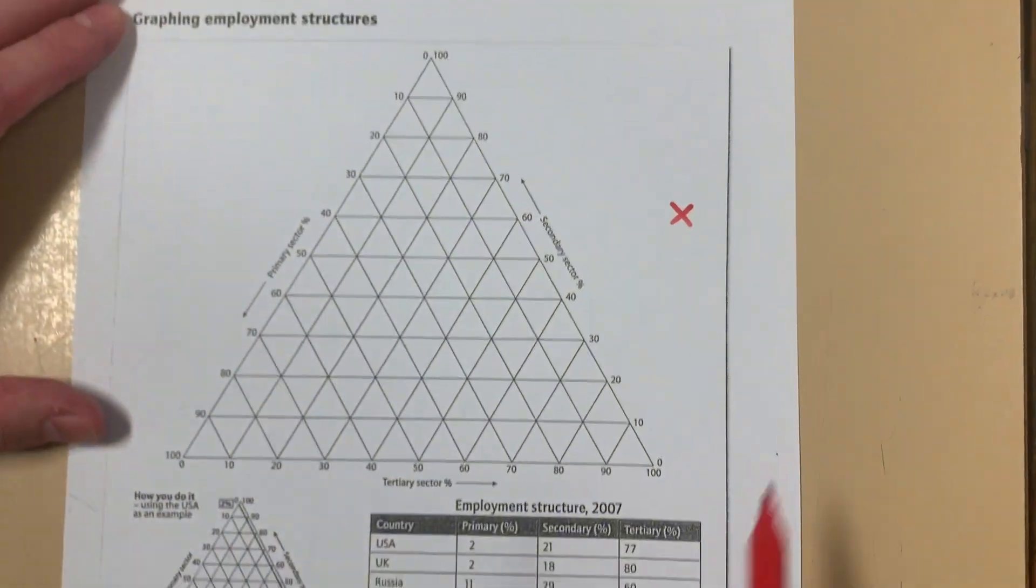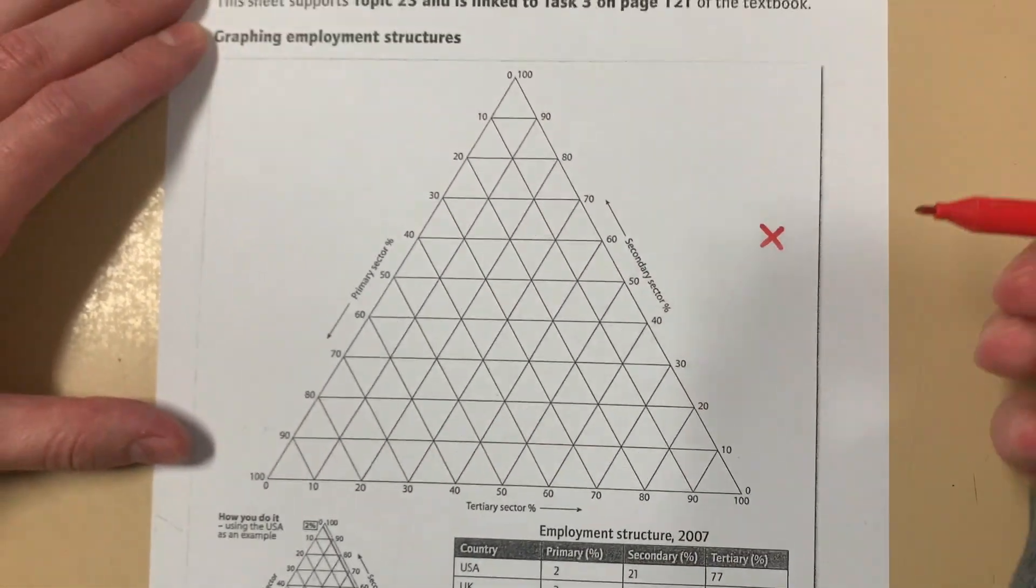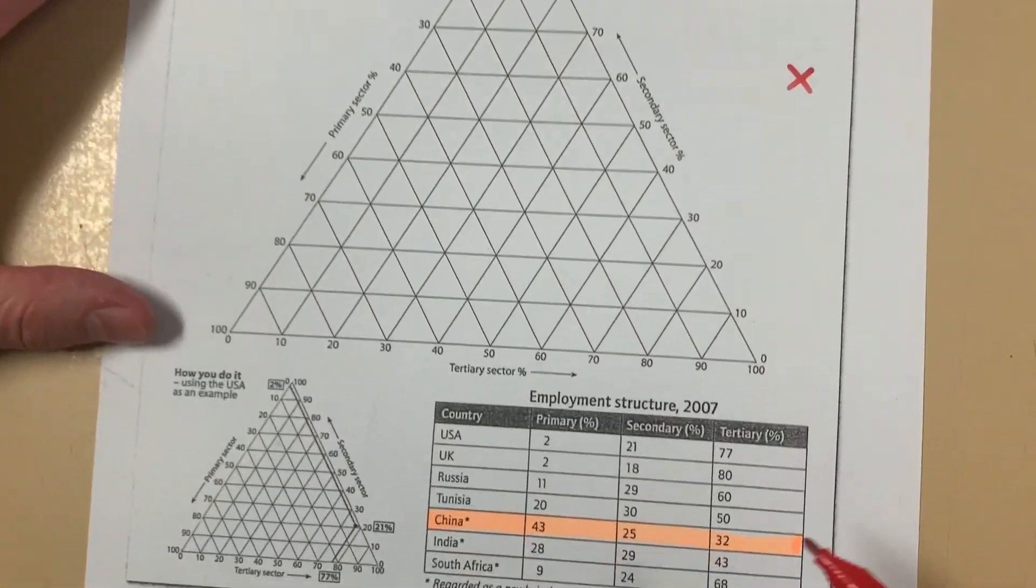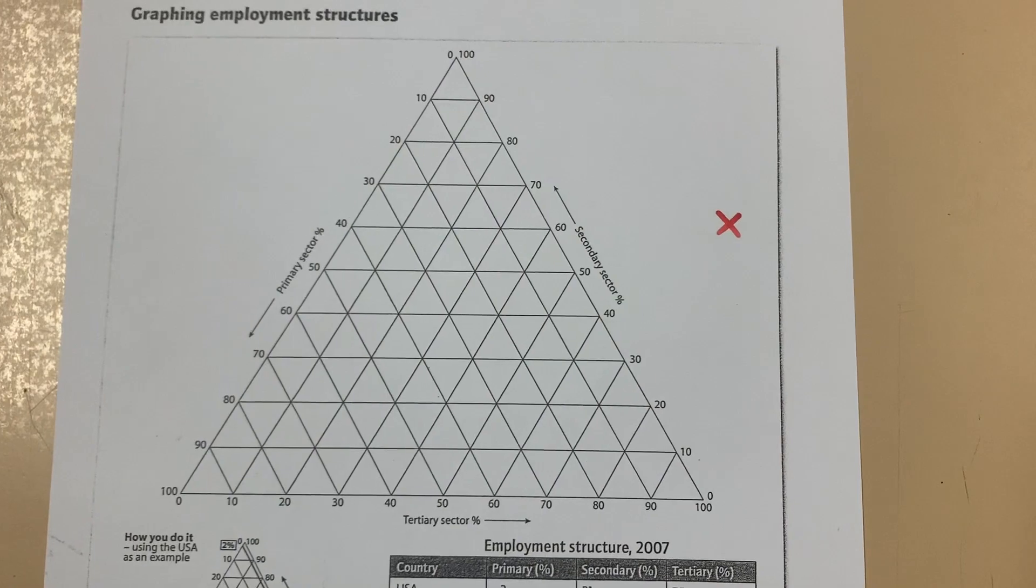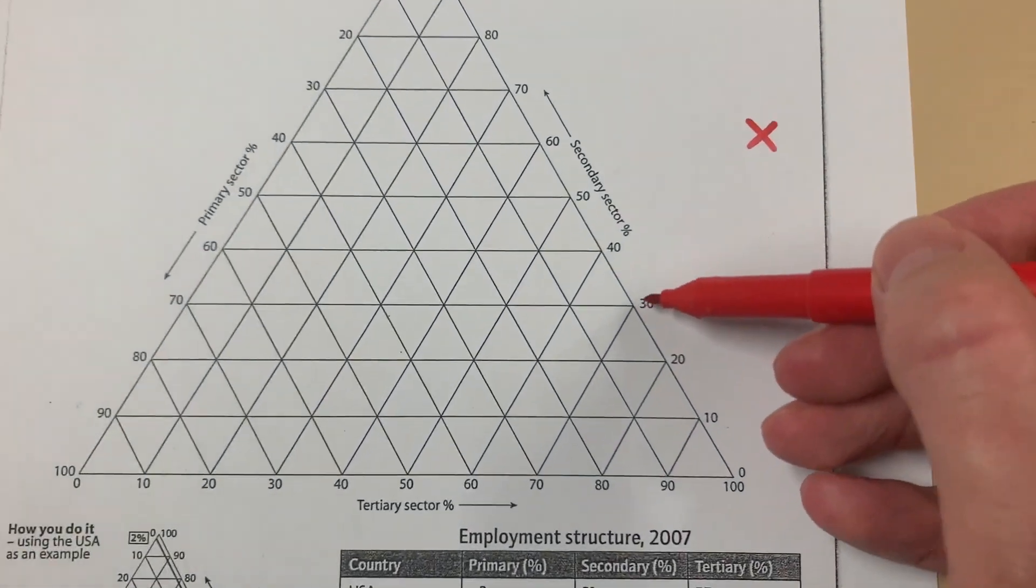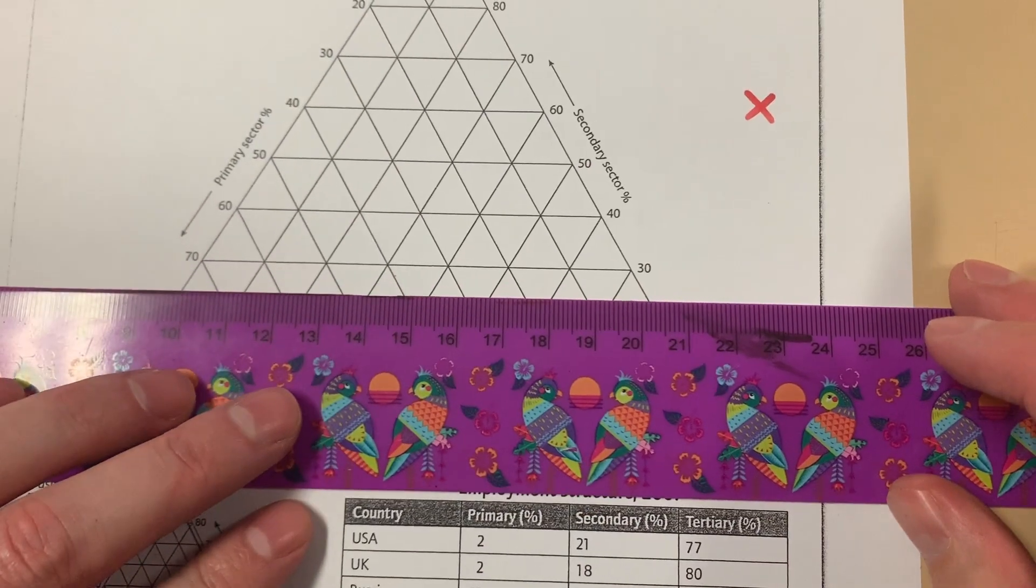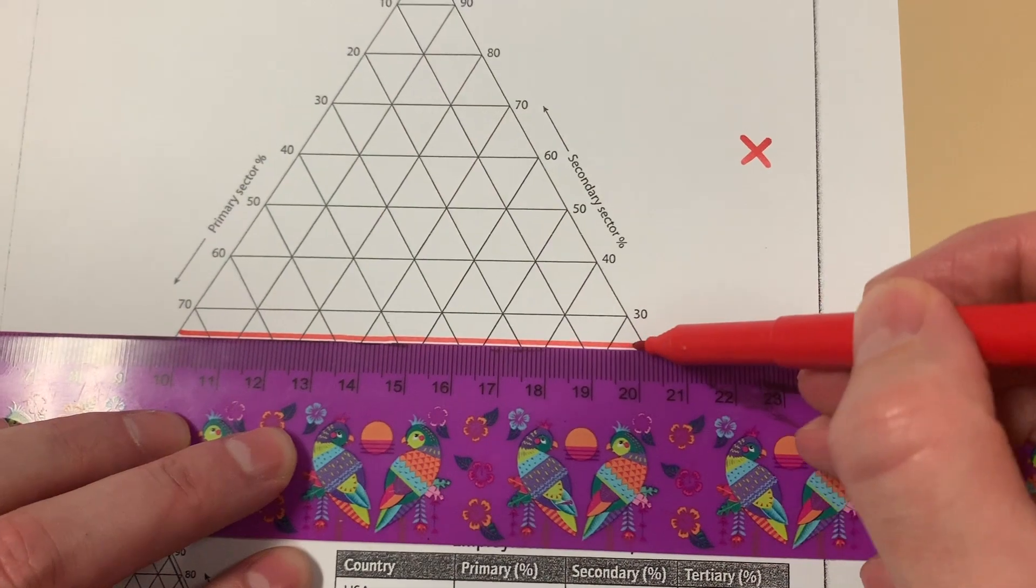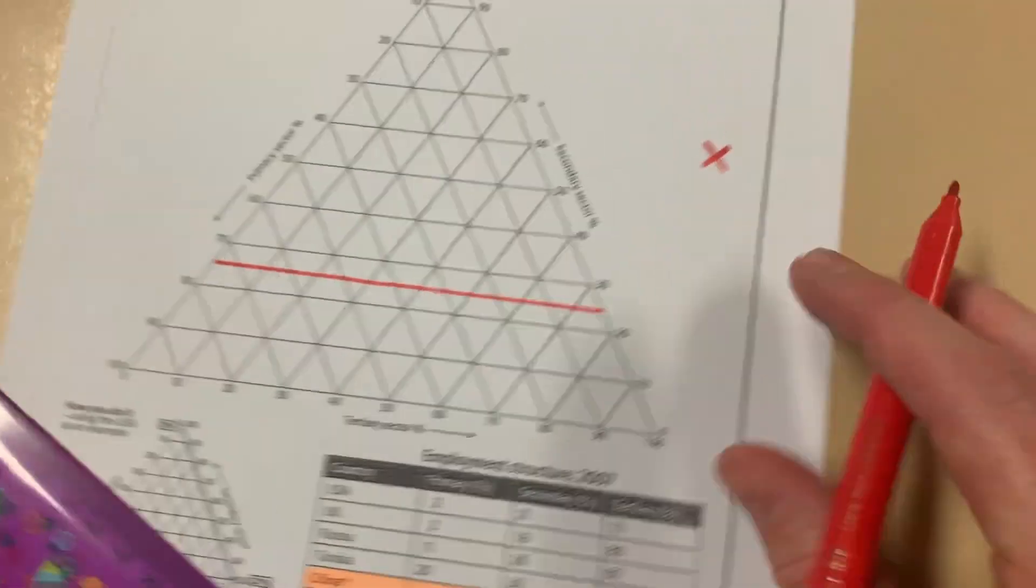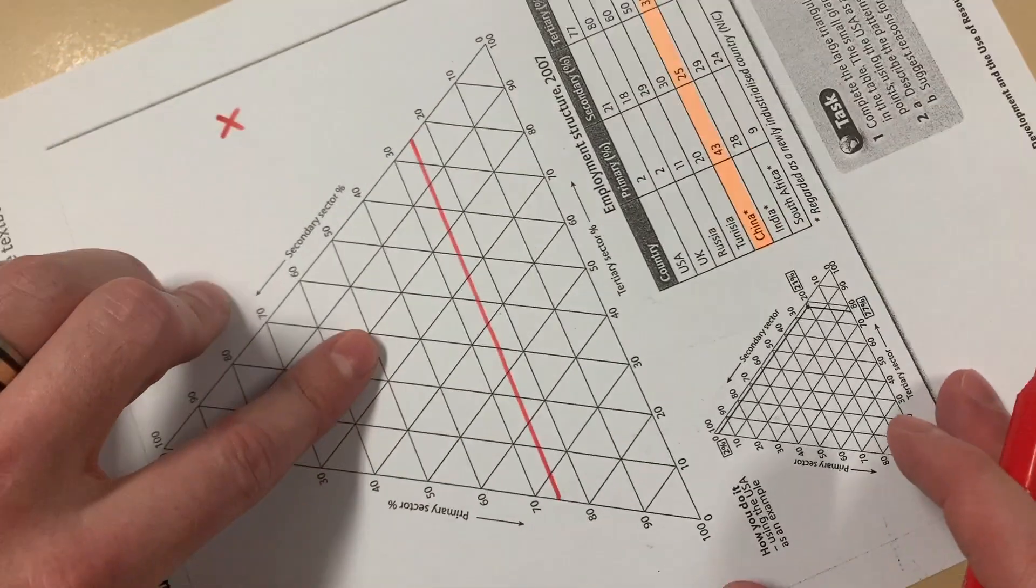So how do we do that? We're going to start with secondary sector over here, because we always start at the right hand side and go horizontally across using the Bonnie Tyler method. So we see here we've got 25% in the secondary industry. So here's 20, here's 30. So 25 generally is right in between. So we are right about there. Okay, so we're going right across for the 25. Now, what do we do? We turn around.